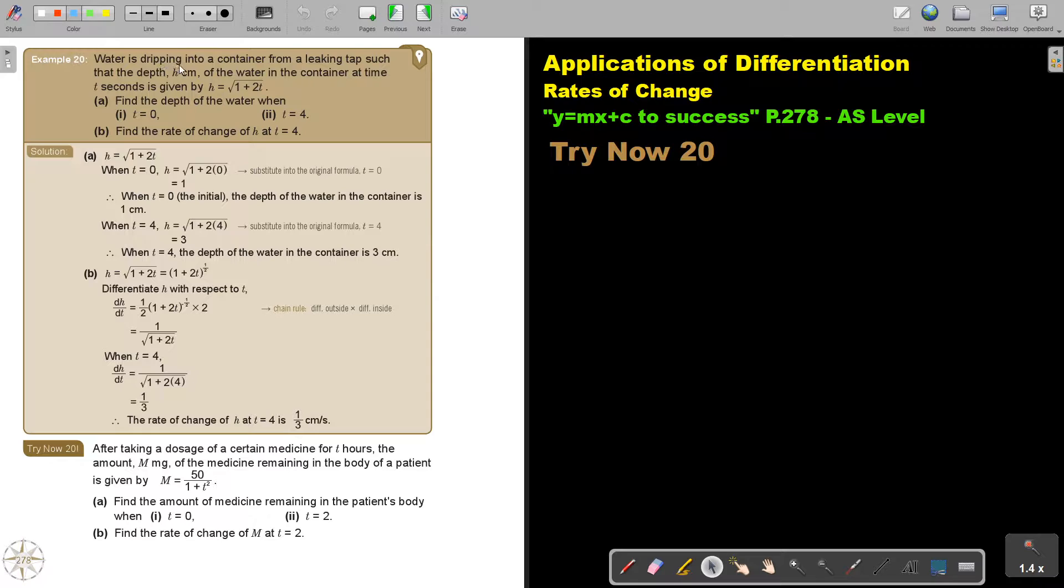Water is dripping into a container from a leaking tap such that the depth of the water in the container at time t seconds is given by this function. Find the depth of the water when t is 0 and t is 4. It's just the depth, so it's actually just the value of h first.